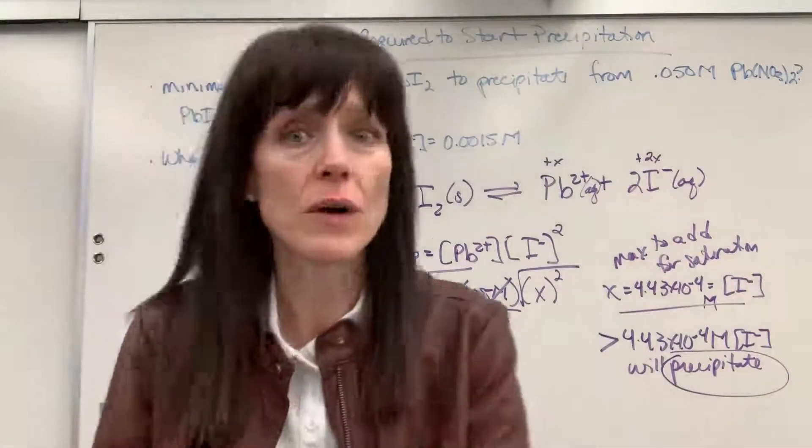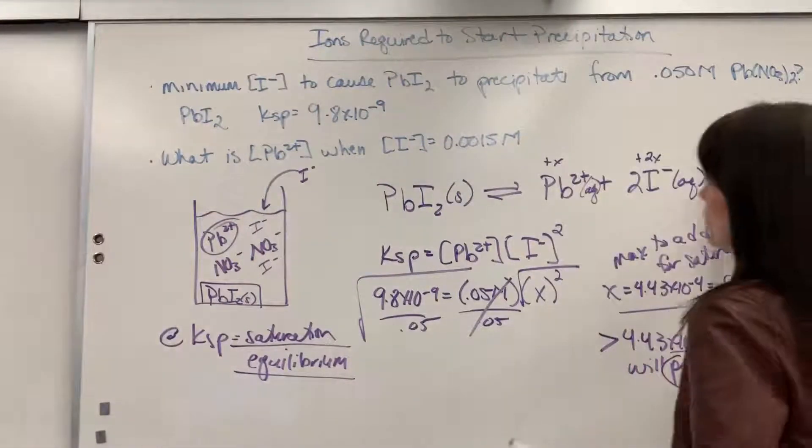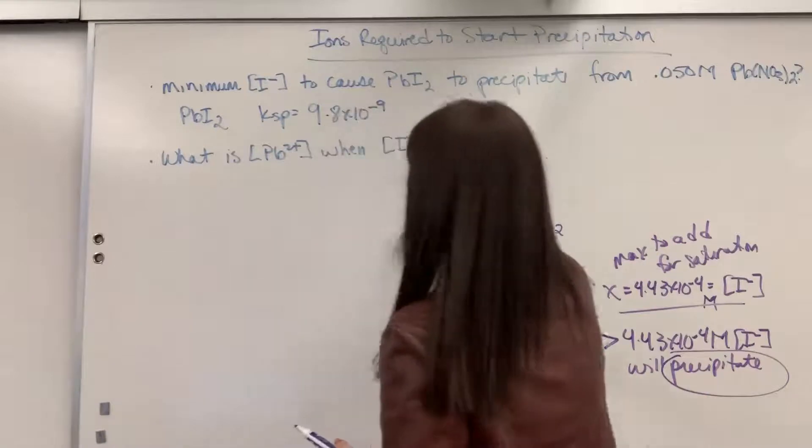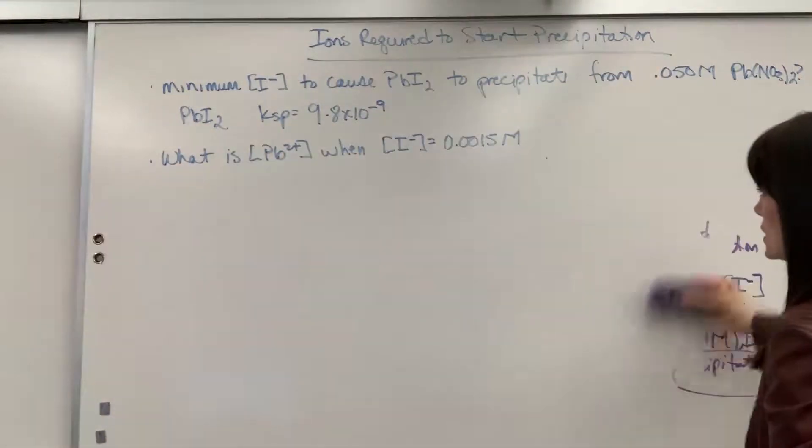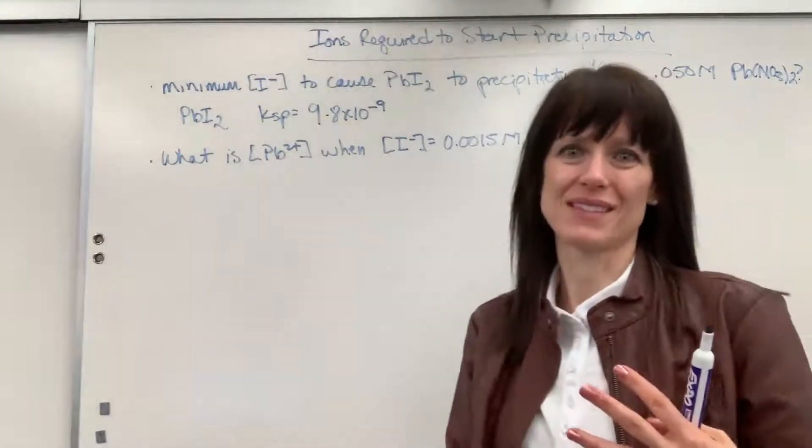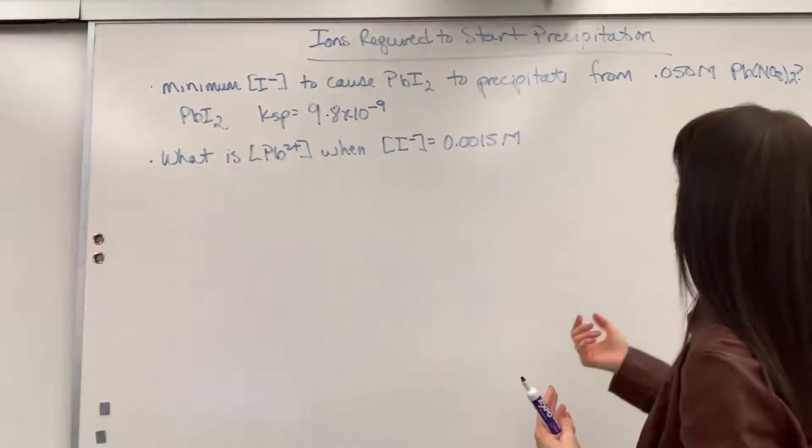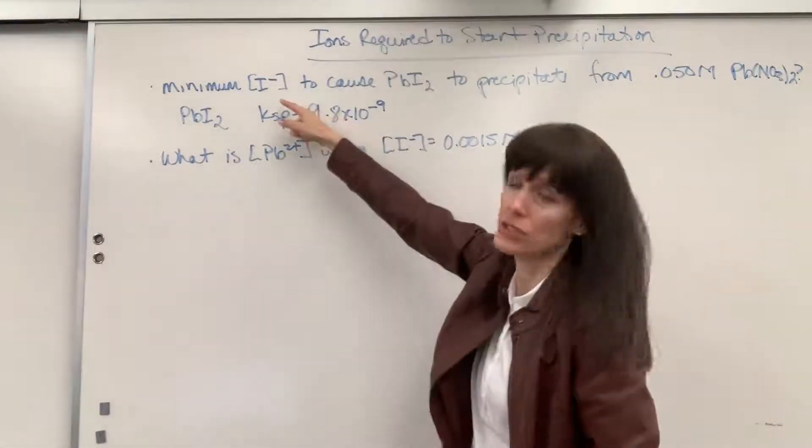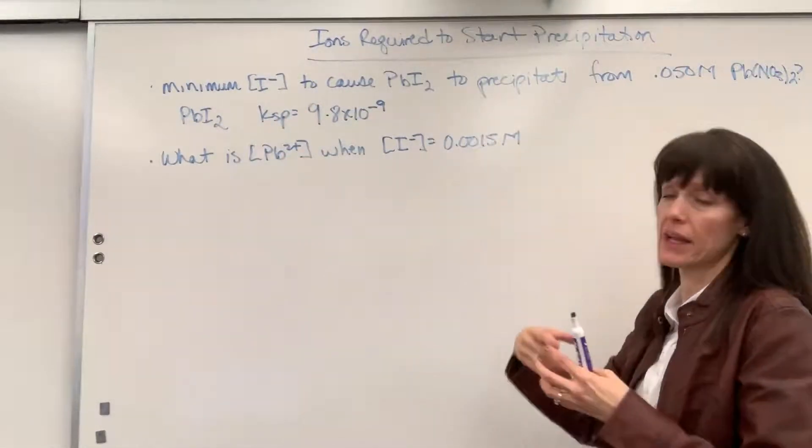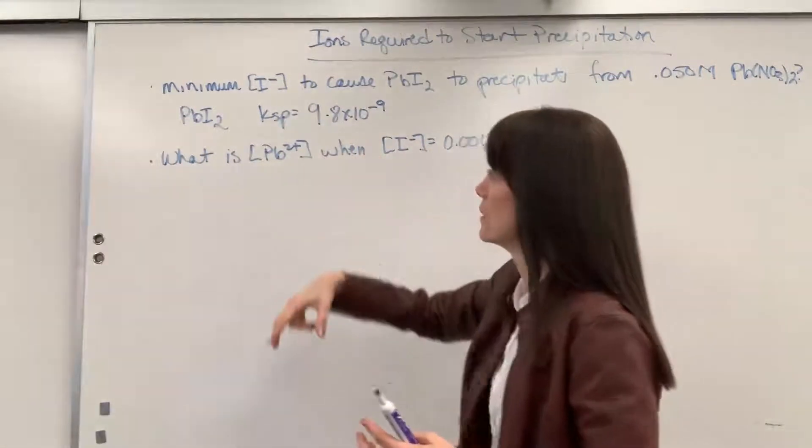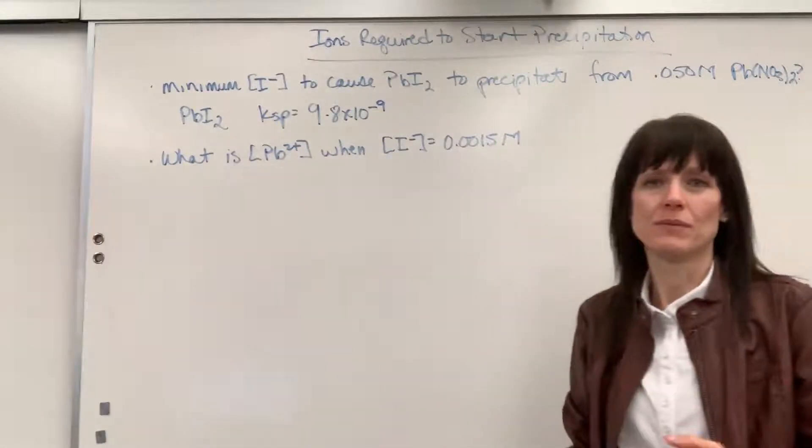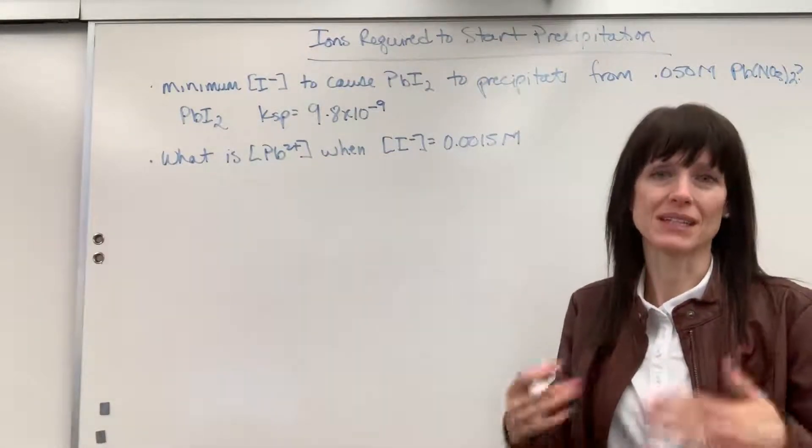Now, there is a follow-up question that's really common with these types of problems. Here's the follow-up question. It says, what is the lead concentration when the iodide is 0.015? So notice what they've done. They've just flipped this thinking. Instead of starting with, hey, here's a lead, let's drop some iodide into it, how much iodide? Now they're saying, oh, hey, wait, you have a solution of iodide. What could you drop in for that lead nitrate? Or what could you drop in for the lead to see, to get to that exact equilibrium, to get to that saturation?